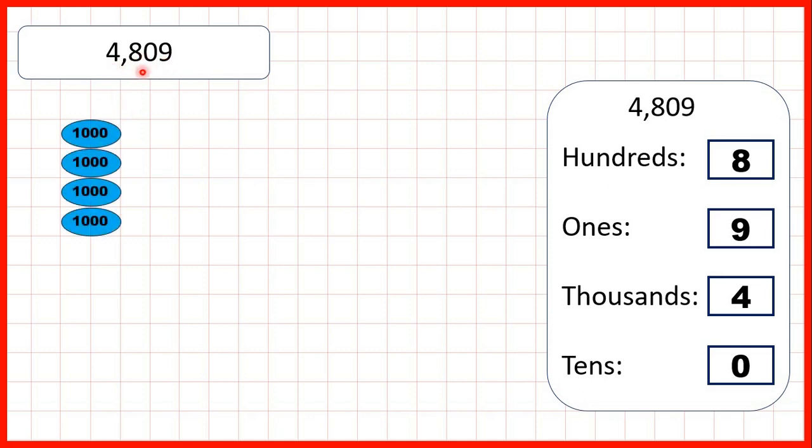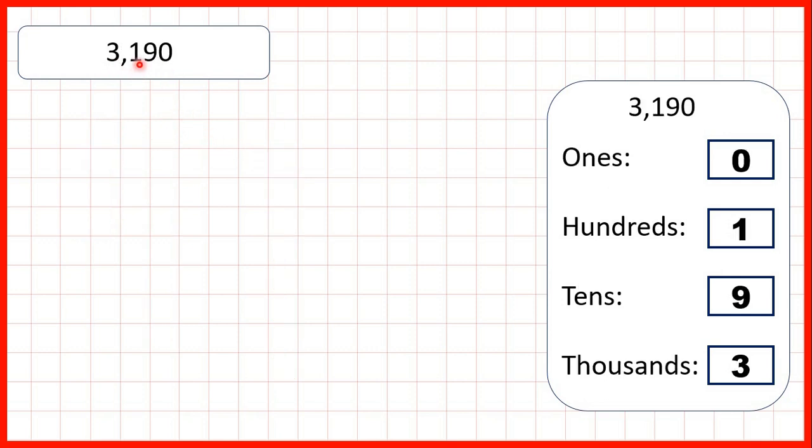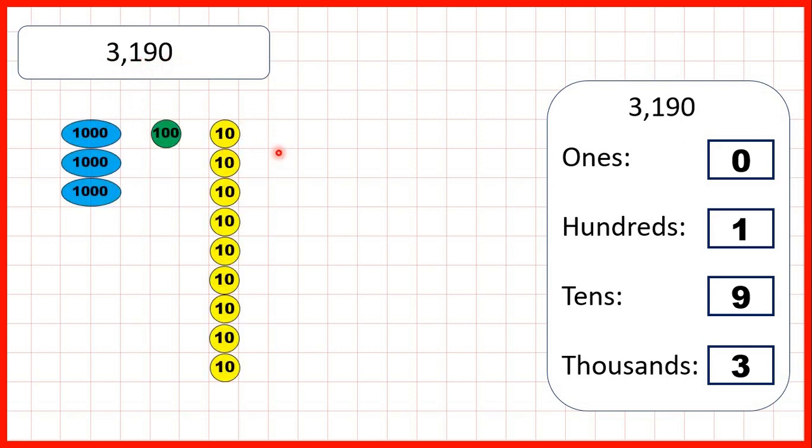For 4,809, that's four thousands, eight hundreds, no tens, and nine ones. And for 3,190, that's three thousands, one hundred, nine tens, and no ones.